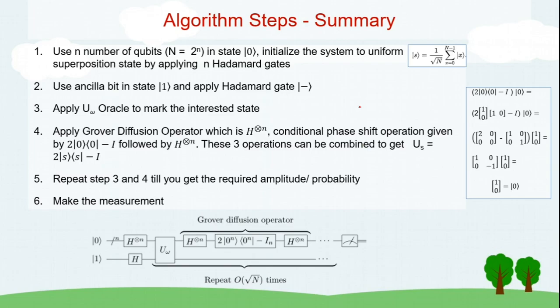Looks very simple. So, how do we implement? Let's try to summarize how we are going to implement it. We will start with n, small n number of qubits. 2 to the power of small n equal to capital N to represent all capital N states. Initialize the system to uniform superposition by applying n Hadamard gates to the n number of qubits. You will get a combined state of s. Then use ancilla bit in state 1 and apply Hadamard gate to get minus state.